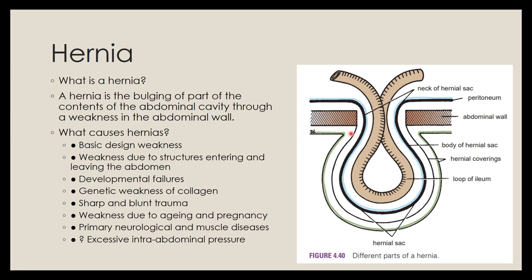In this picture, you can see the abdominal wall and a loop of intestine that has come out from it. It is covered by peritoneum as well as layers of the abdominal wall. This is a hernia.